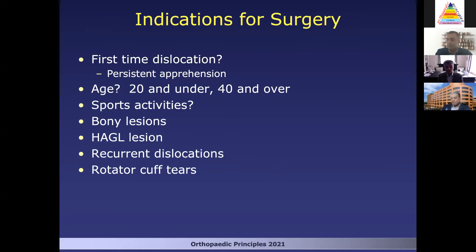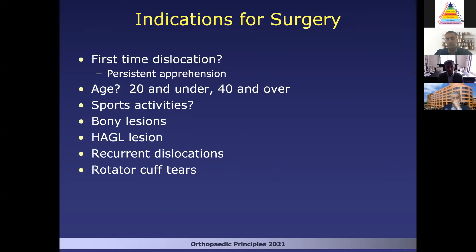If they're 40 and over, I'm really just concerned about rotator cuff injury. If they don't have a rotator cuff tear, I'm going to treat them non-operatively unless they prove to be persistently unstable or they dislocate again. Bony lesions will obviously be an indication for surgery, as this is more likely to develop into recurrent instability. A HAGL lesion is also something I would consider operating on, as there are good studies showing those are dealt with better if fixed acutely rather than delayed. And recurrent dislocations is usually a strong indication for surgery, as is rotator cuff tears.